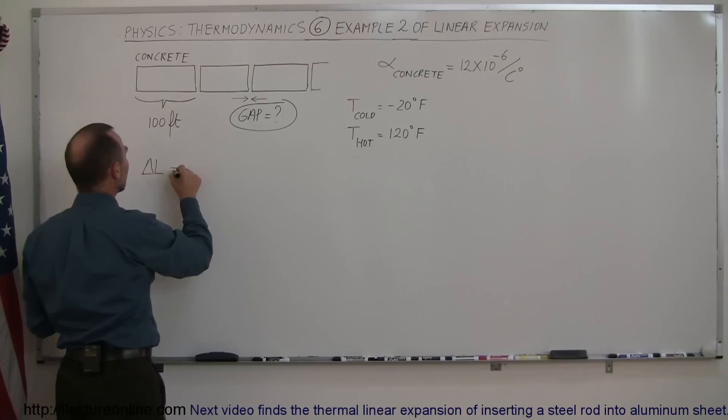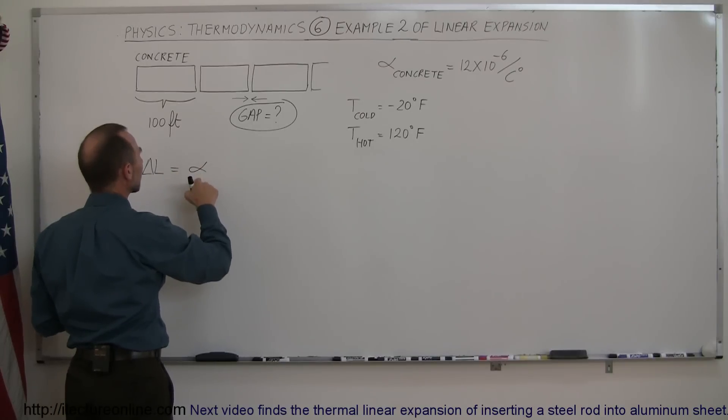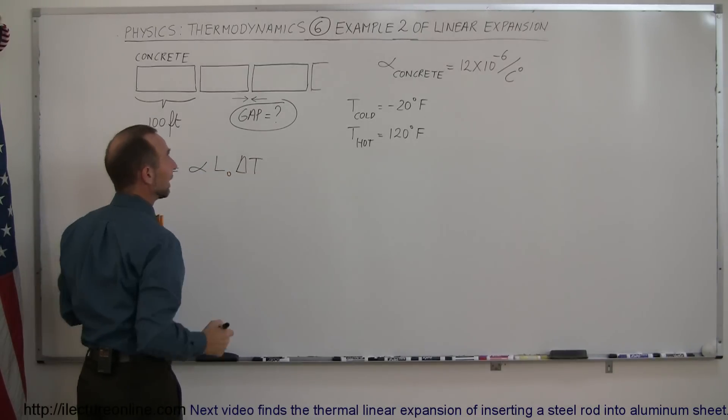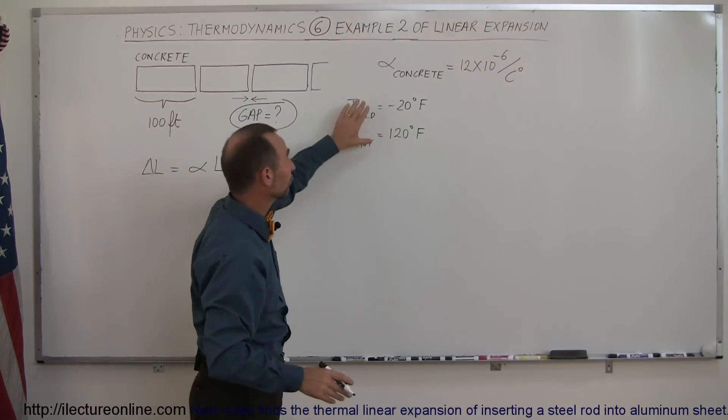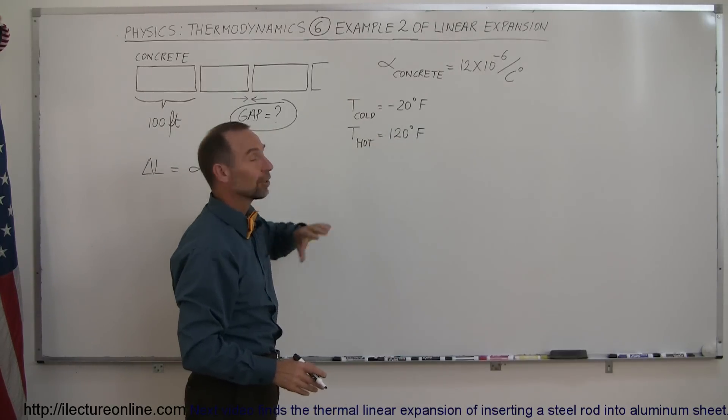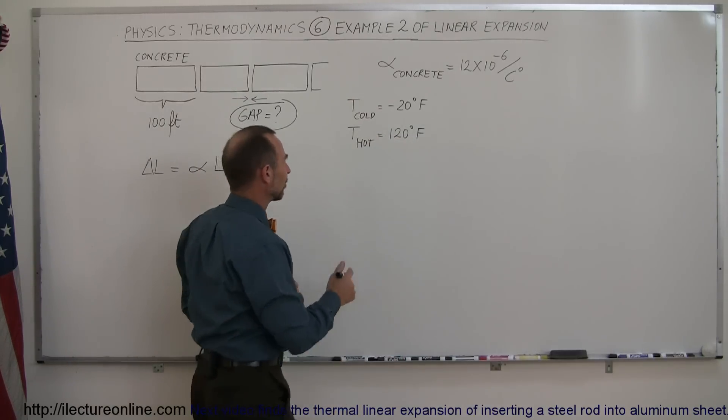All right, we know that delta L is equal to the coefficient of linear expansion times original length times the change in the temperature. And since the coefficient is given in terms of centigrade degrees, we have to convert the delta temperature in Fahrenheit degrees to the delta temperature in centigrade degrees.